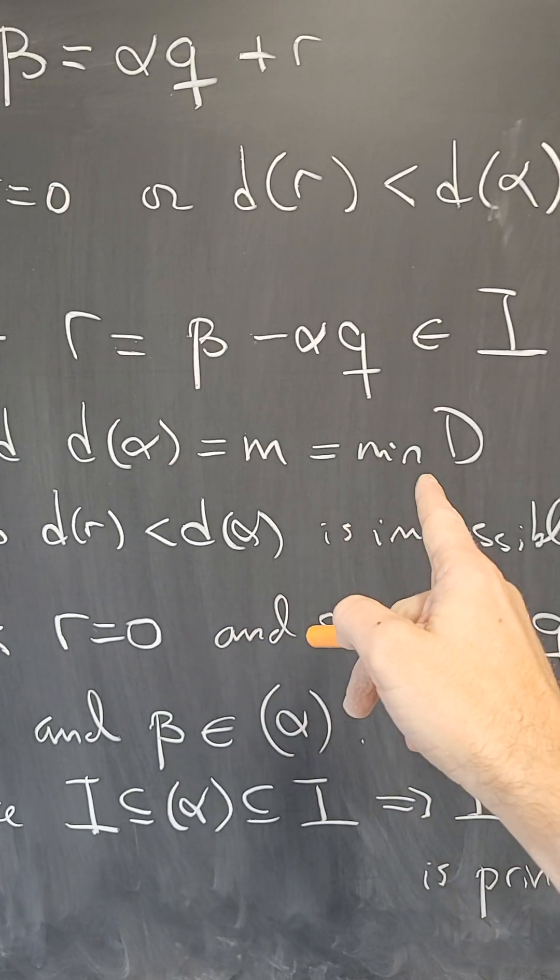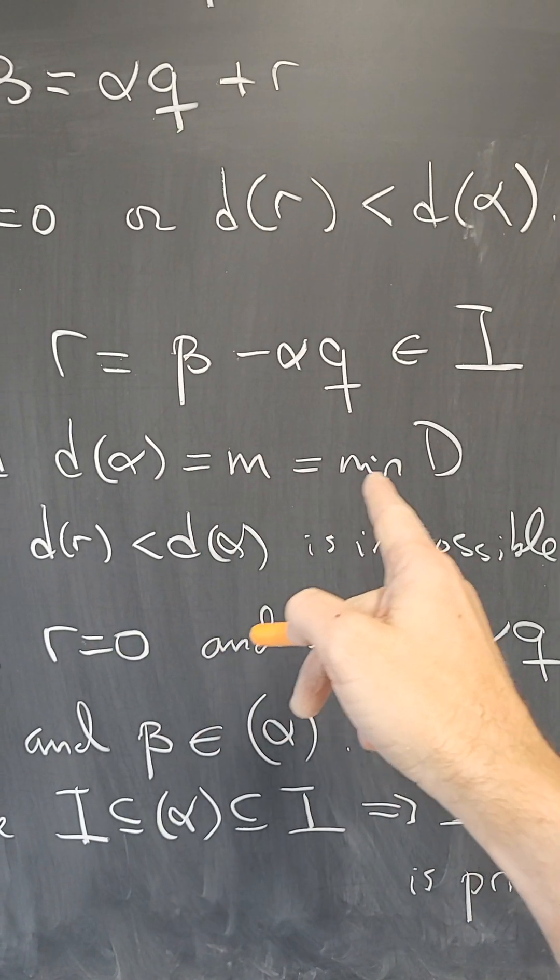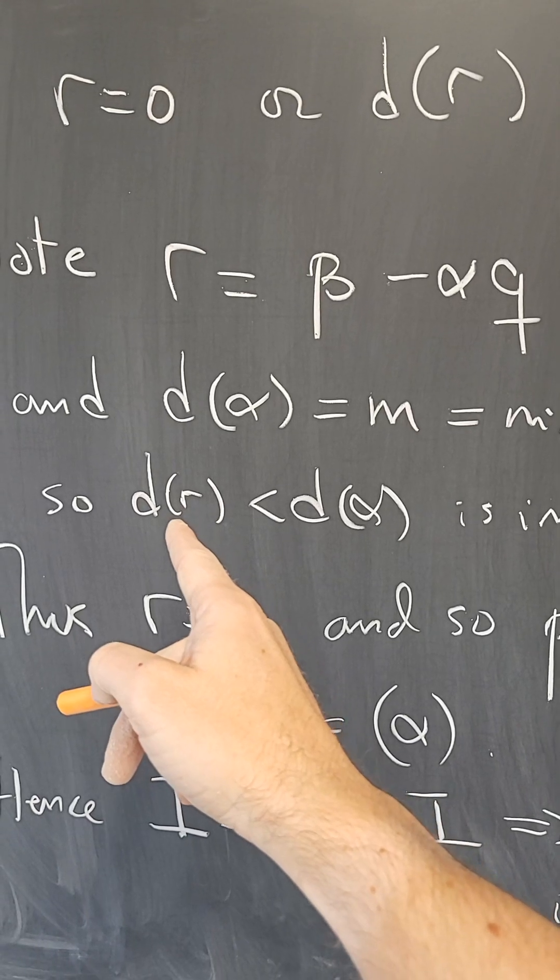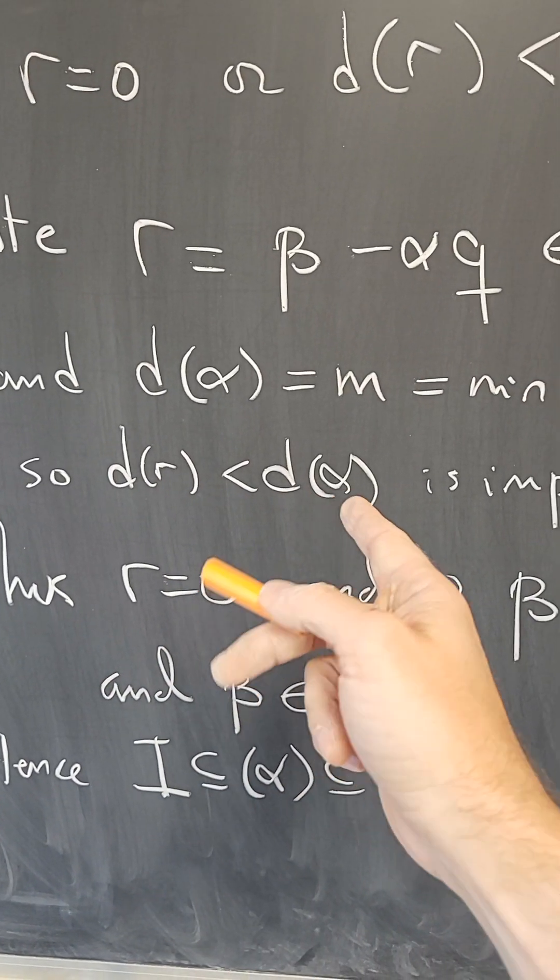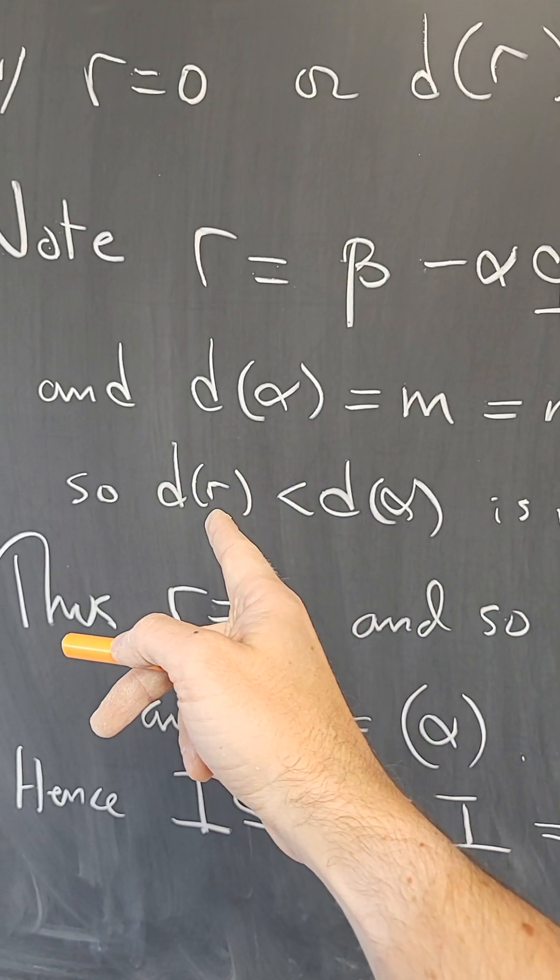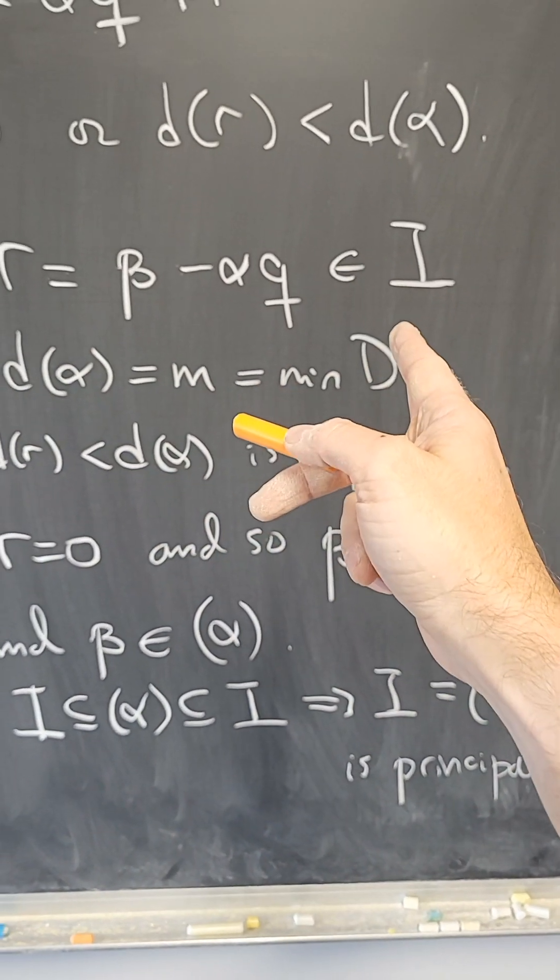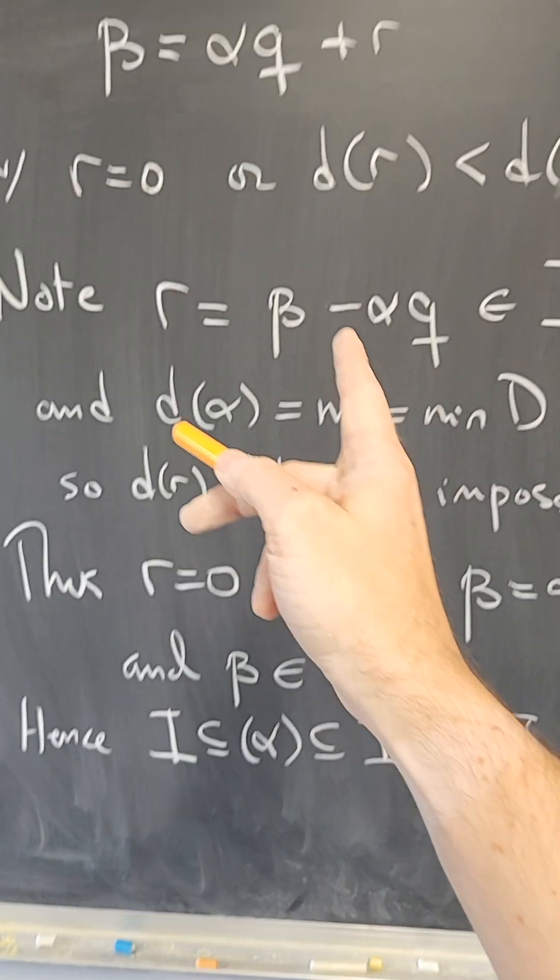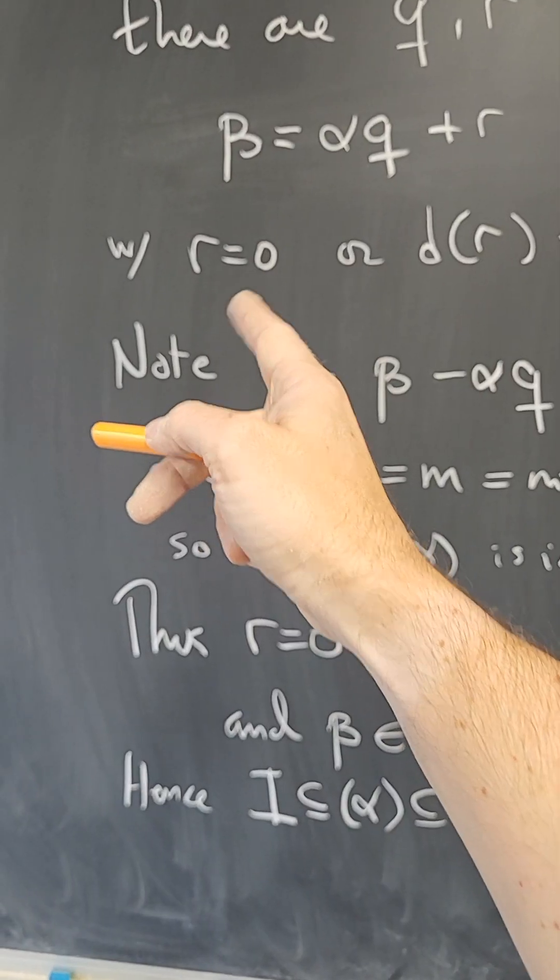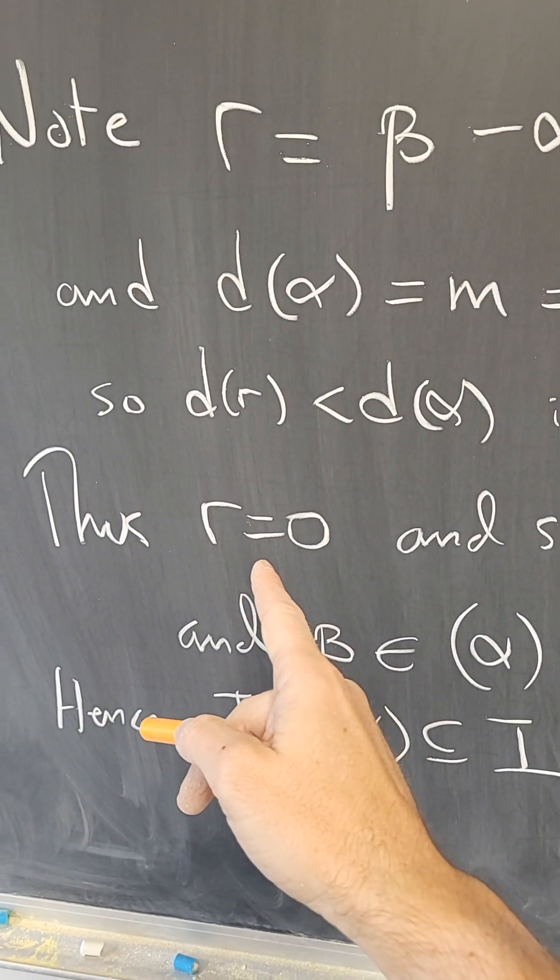But D of alpha was the minimum D value of things in the ideal, so the D of R being less than D of alpha is impossible because M was the minimum such value, so there cannot be a smaller value among the elements of the ideal. Therefore, this possibility is nonsense, so we must have that the remainder is zero.